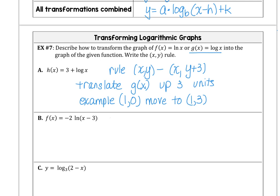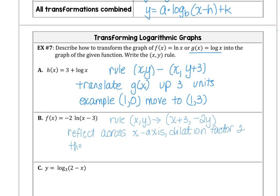For example b, the rule for x,y is going to be add 3 to the x and multiply negative 2 times the y because we've got a reflection across the x-axis and we have a dilation factor of 2. That's going to stretch the graph, but we also have 3 units to the right for the x minus 3. Using that same ordered pair 1,0 as our example, then our transformed graph would move that point to 4,0.